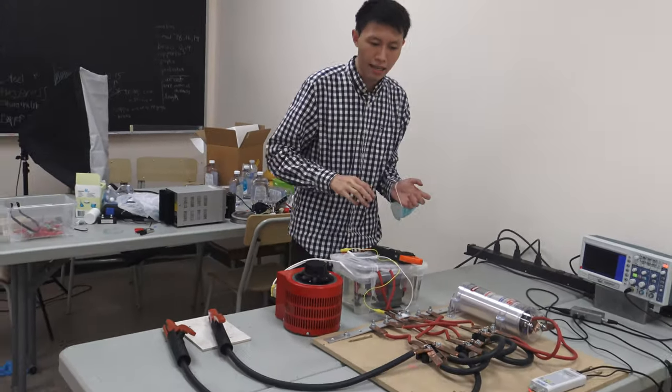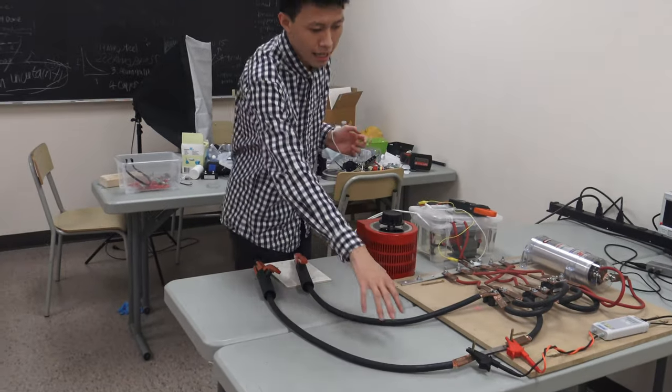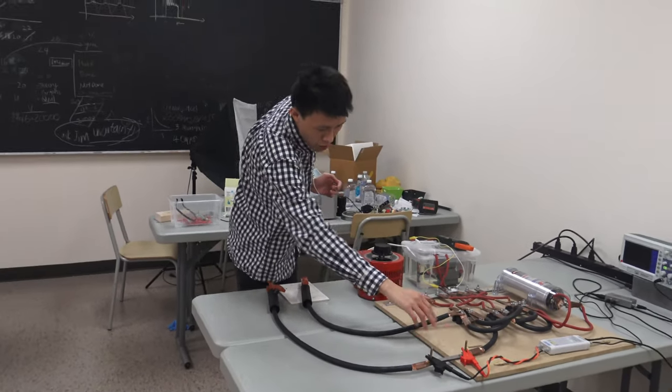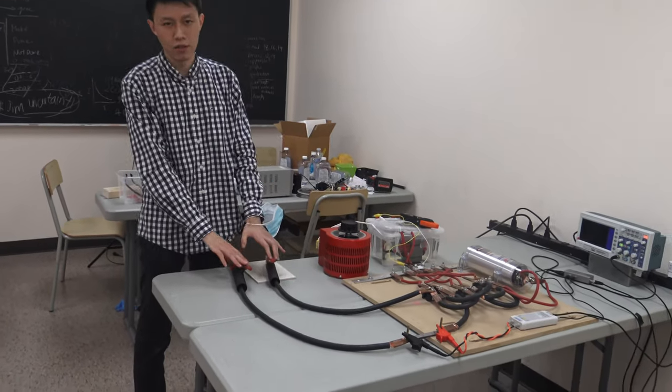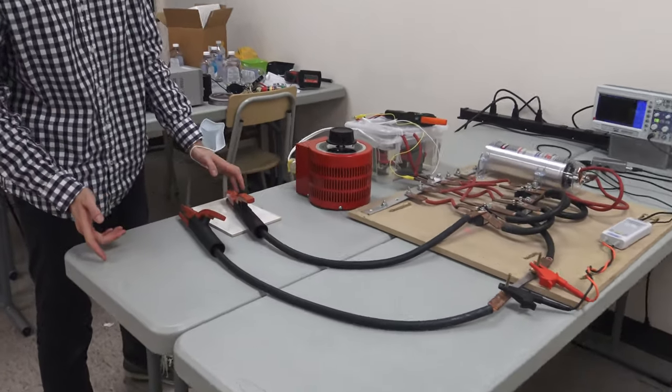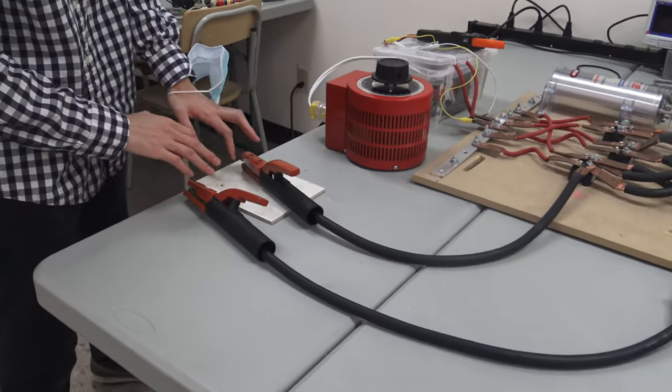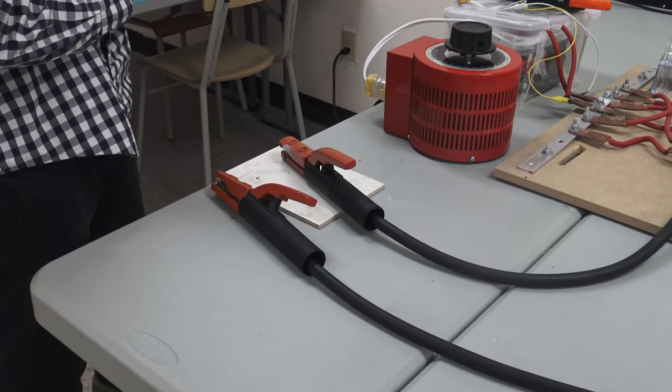And then the DC current will go through this shunt which we made and calibrated ourselves. And then here we have these two gigantic welding clamps which will hold our fuse right here.